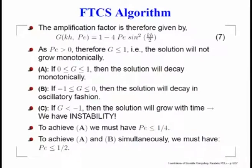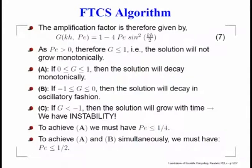If G lies between 0 and 1, the solution will not grow and will slowly come down retaining the same sign — you should see the solution decaying monotonically. As we plot G versus kh: for small kh the expression goes to 1, and as kh increases it comes down. There is a limiting value of kh for which G = 0, after which for higher kh it can take negative values.